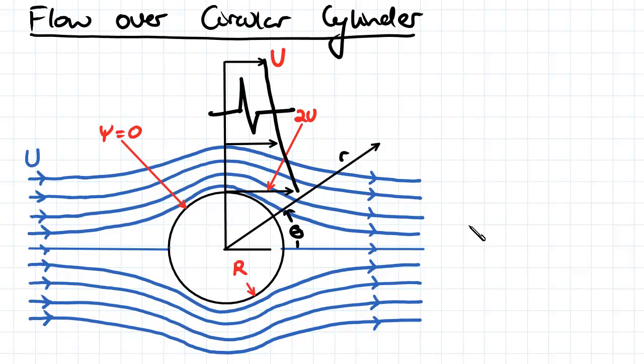An important thing to note is the distribution of our velocity. Our velocity at our cylinder here is equal to 2u and then that's going to change all the way back to u at some distance from the circle.